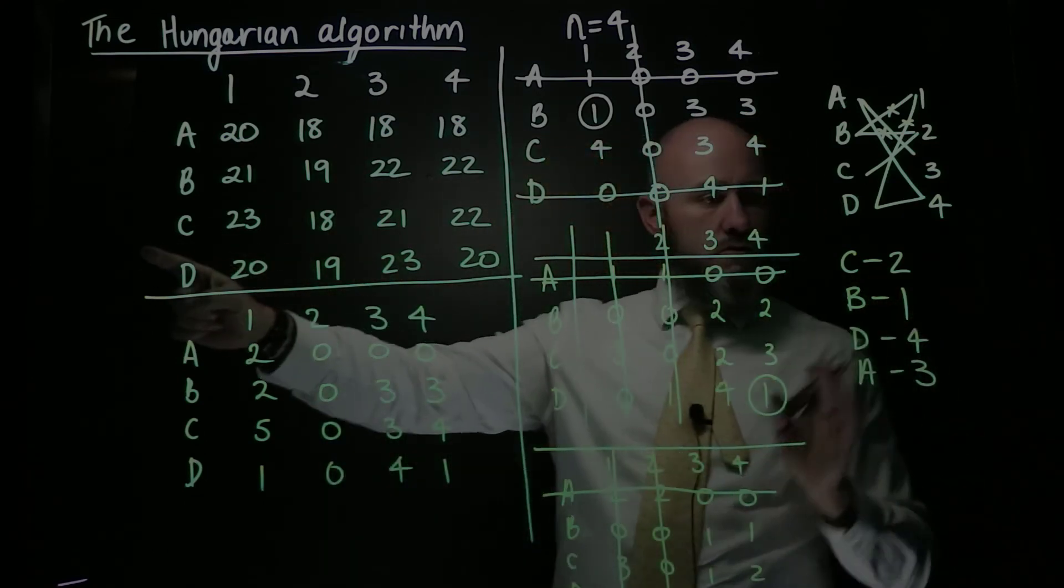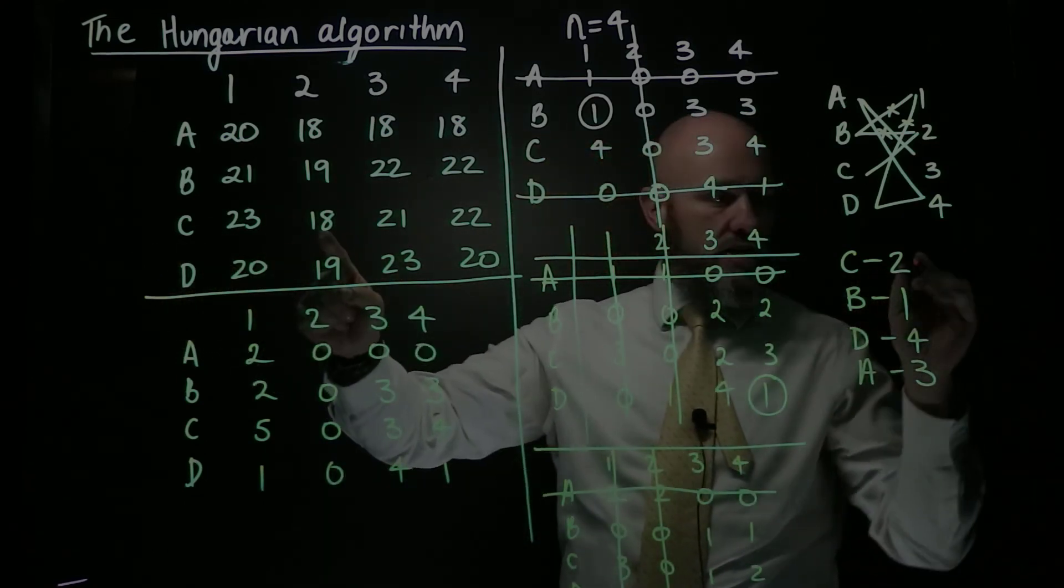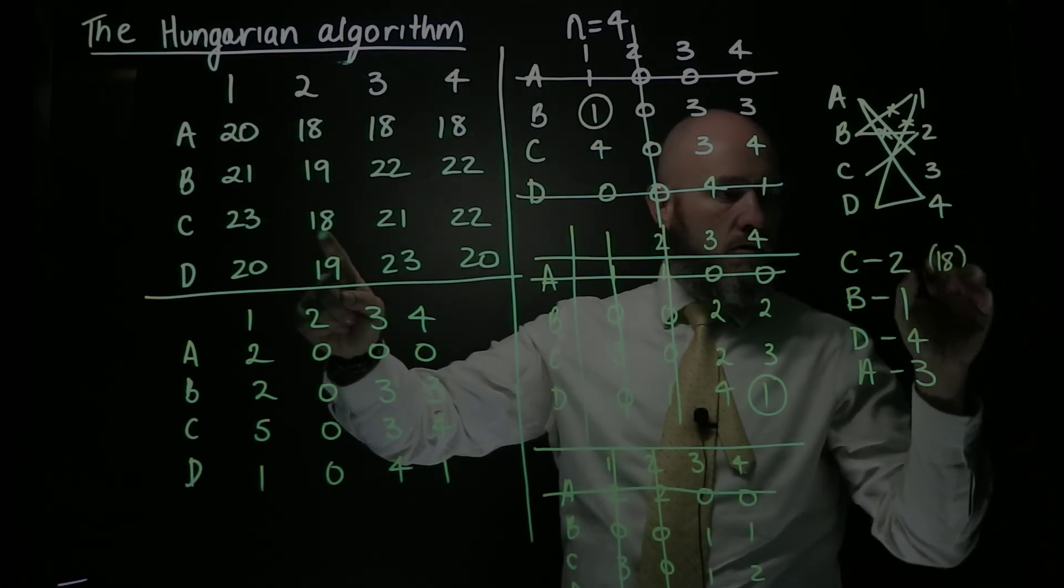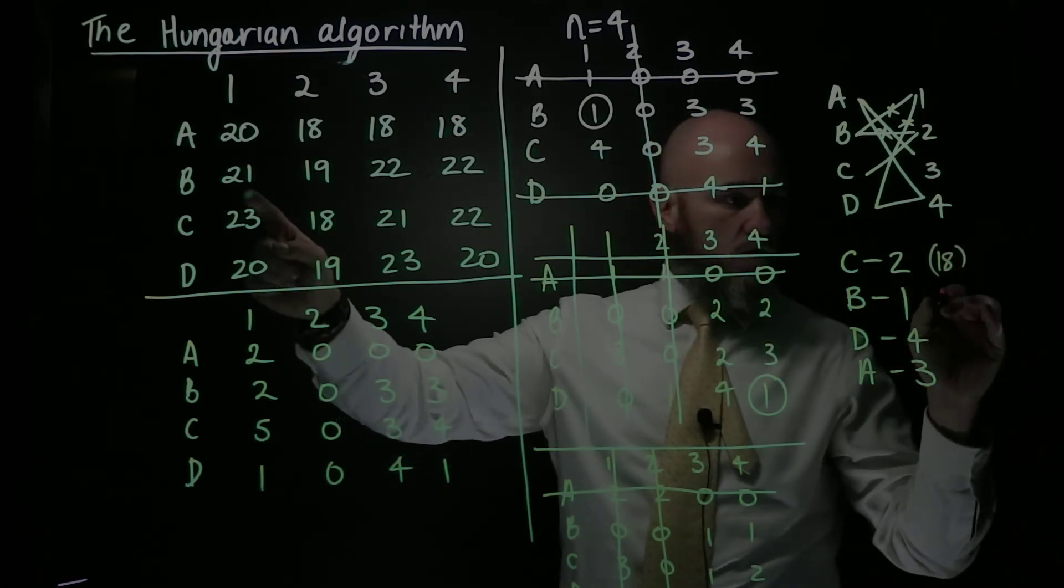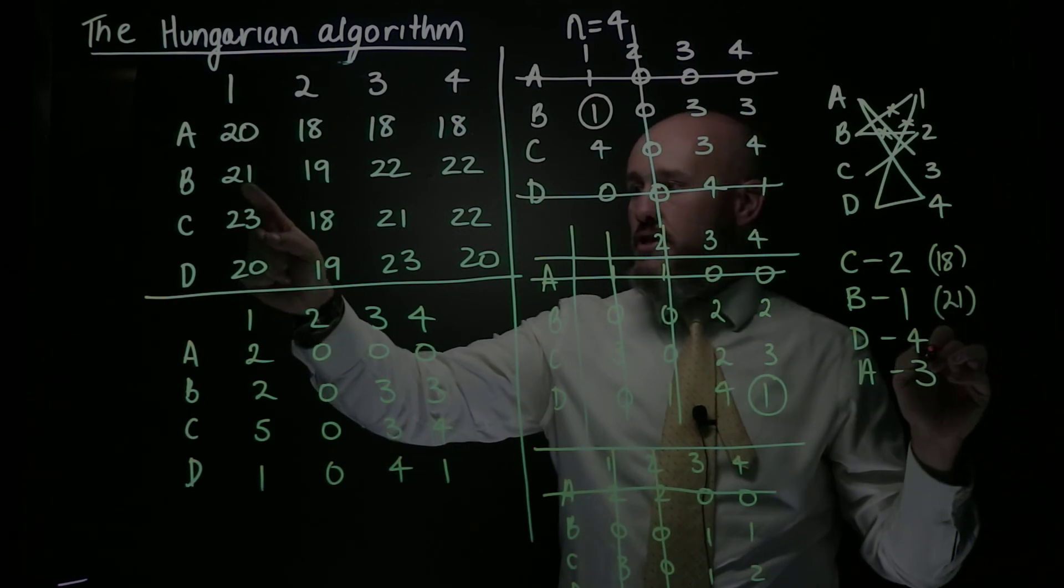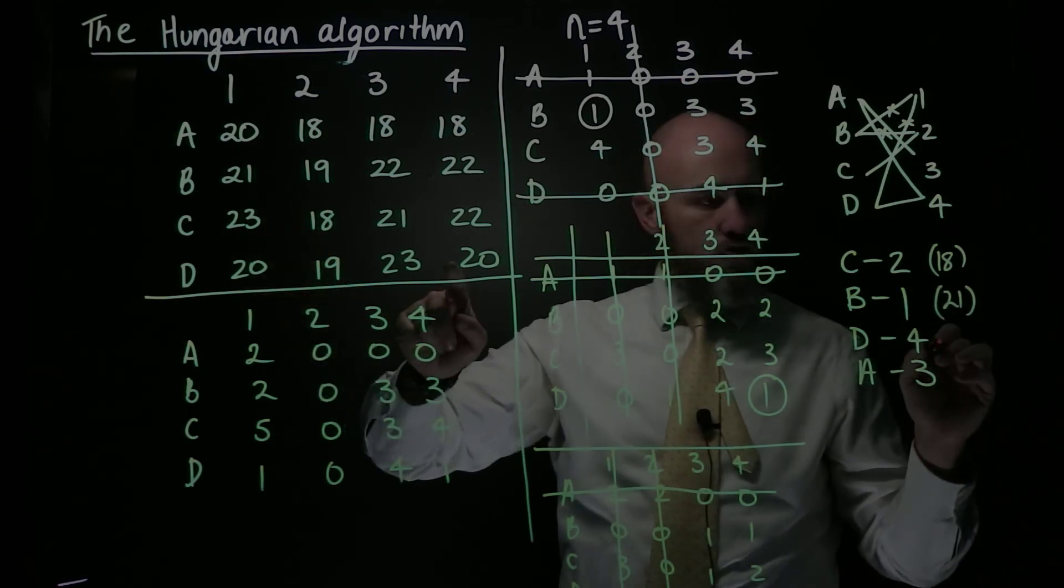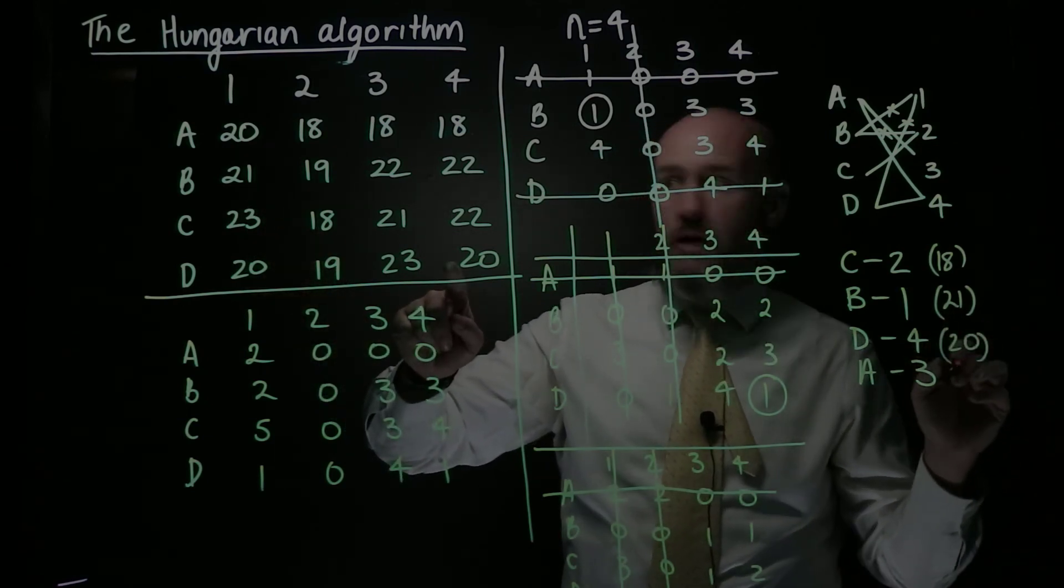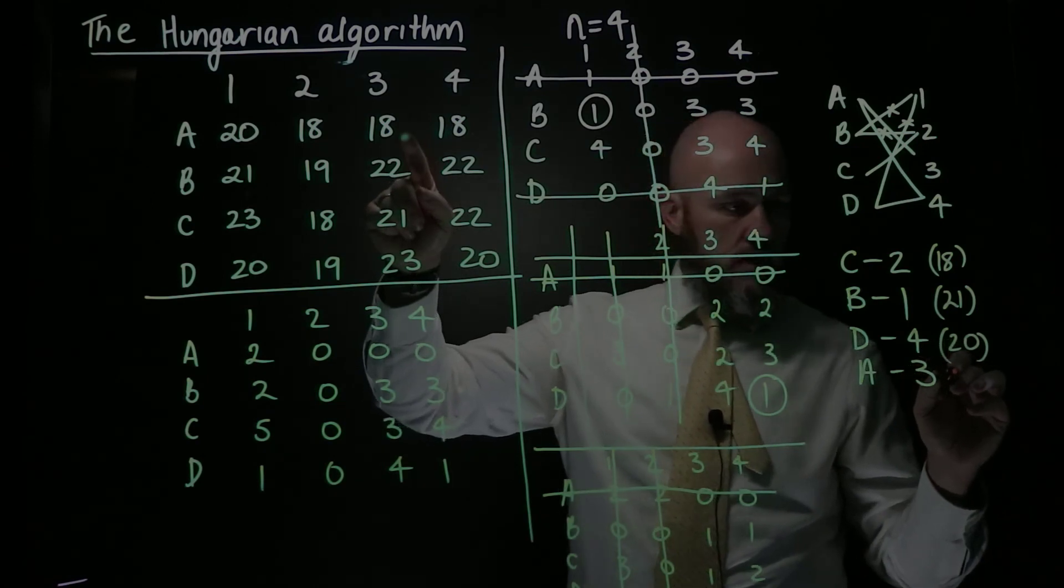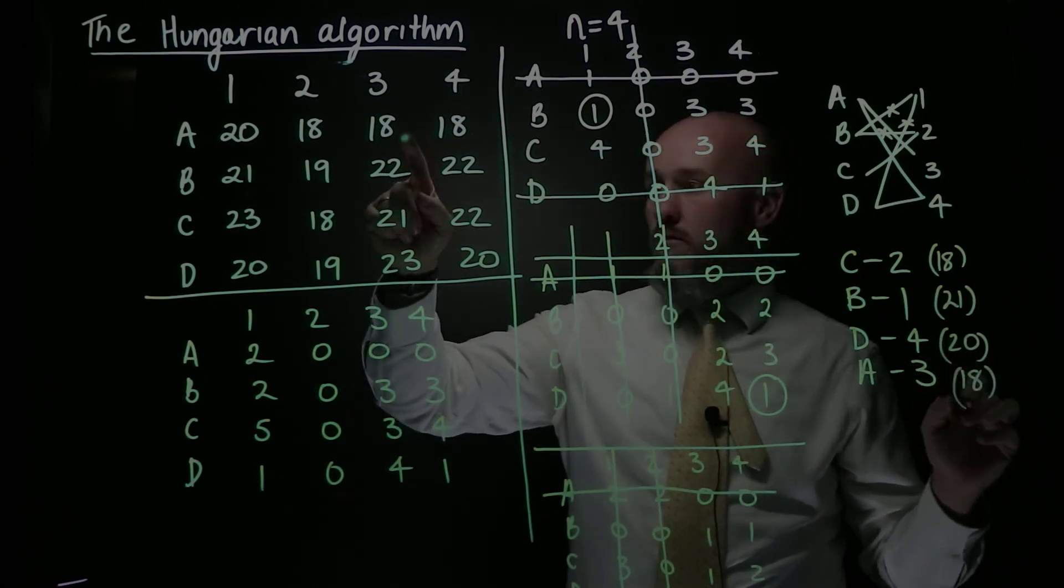So I'll go down next to the C, C matches to 2, that's 18. And B matches to 1, that's 21. And D matches to 4, that's 20. And A matches to 3, which is 18. Got all those right, haven't I? Yep.